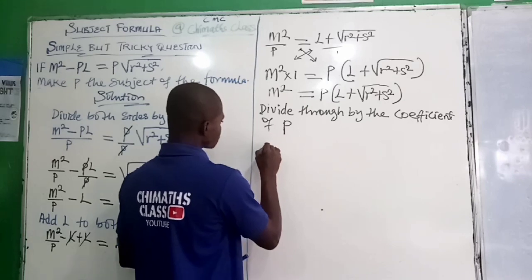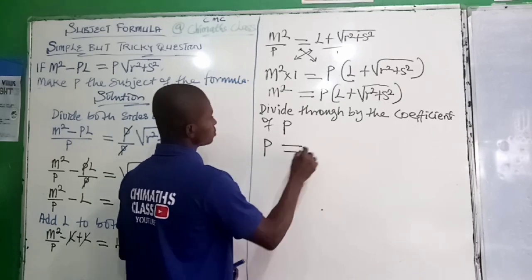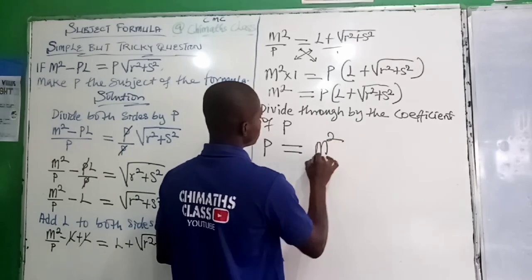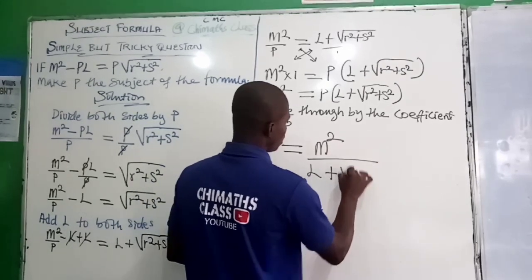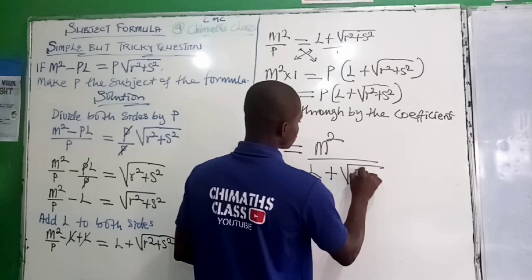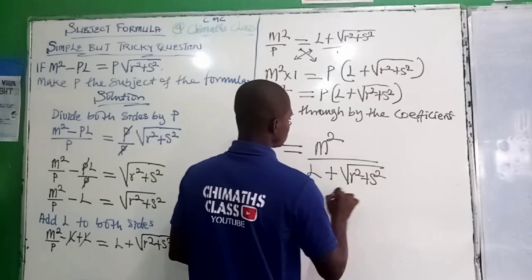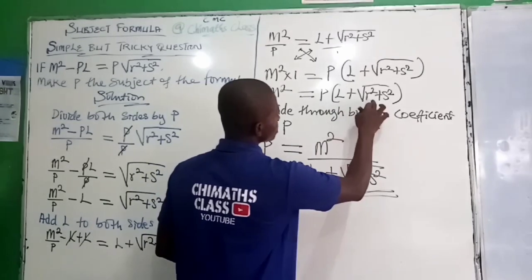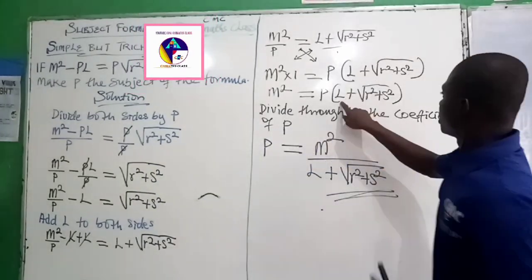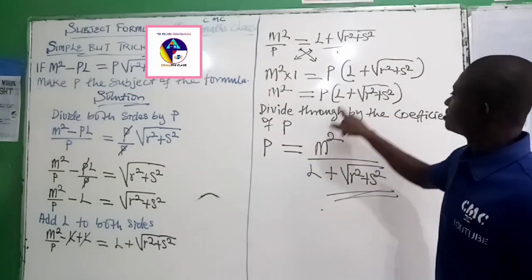So we have that P is equal to M squared over L plus the root of R squared plus S squared. That is the answer. We are using L plus root R squared to divide both sides.